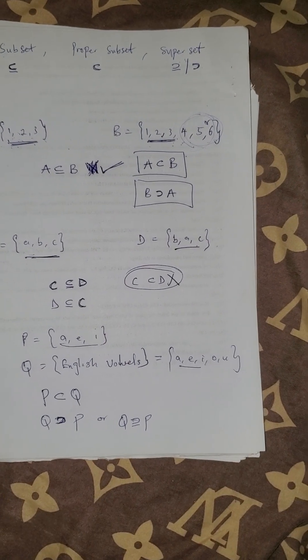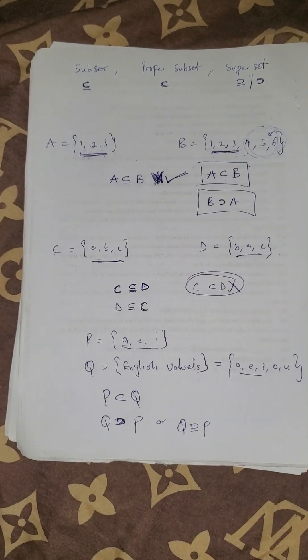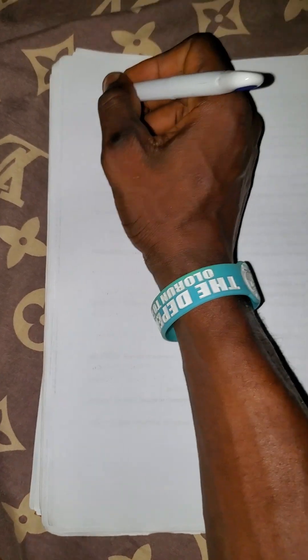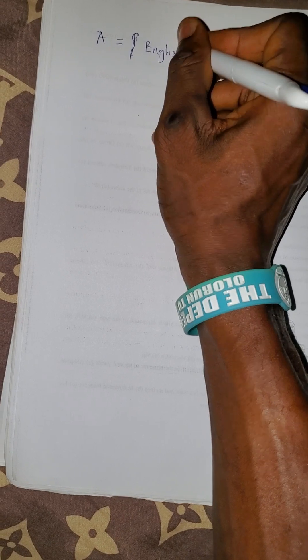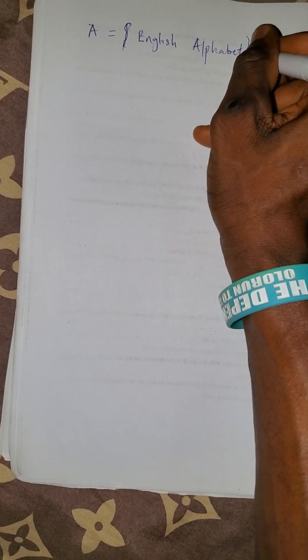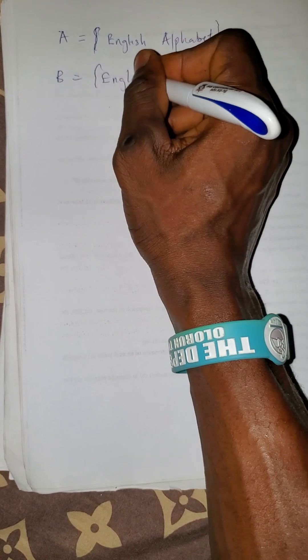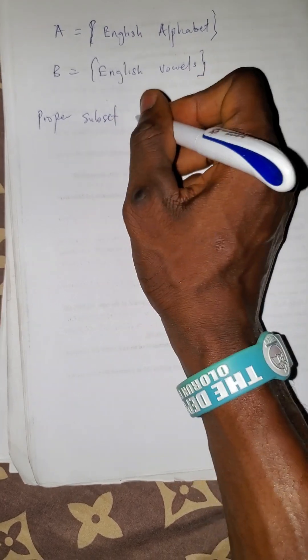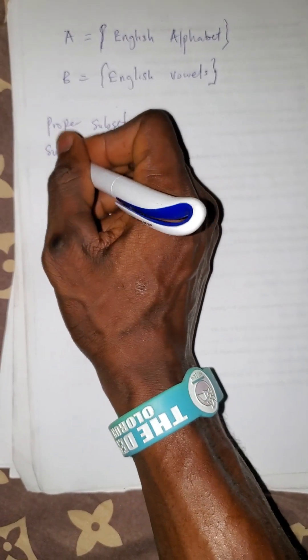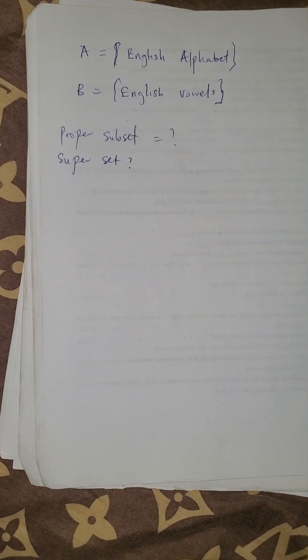This is the difference between subsets, proper subsets, and supersets. Now, in the comment section: if you have A equal to the English alphabet and B equal to the English vowels, which of these is a proper subset, and which of these is a superset? Let me have your answers in the comment section. Thank you very much. God bless you. Like, comment, and subscribe.